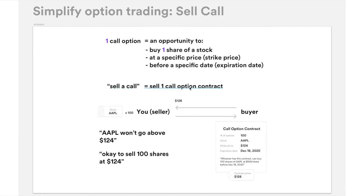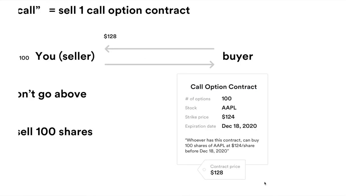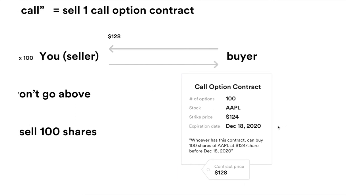Sell call means selling a call option contract. You are selling a contract, and this is what a contract looks like — it's the same as the contract if you were to buy one. It's just that we are switching the position. In this video, you are the seller.